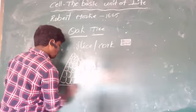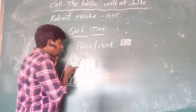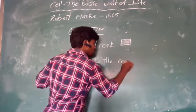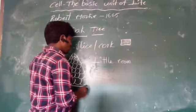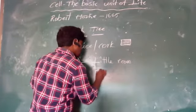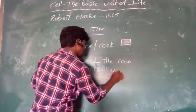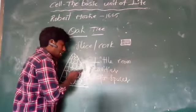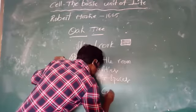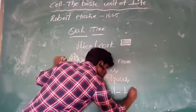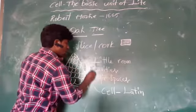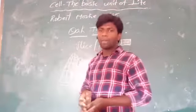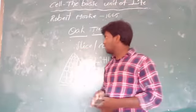He called these empty spaces or cavities a 'little room.' In Latin, the word for little room is 'cell.' So he called these structures cells. This is how Robert Hooke discovered and named the cell in the year 1665.